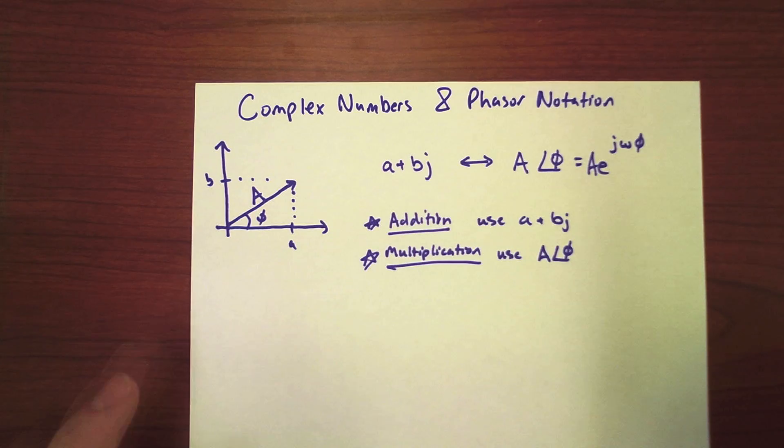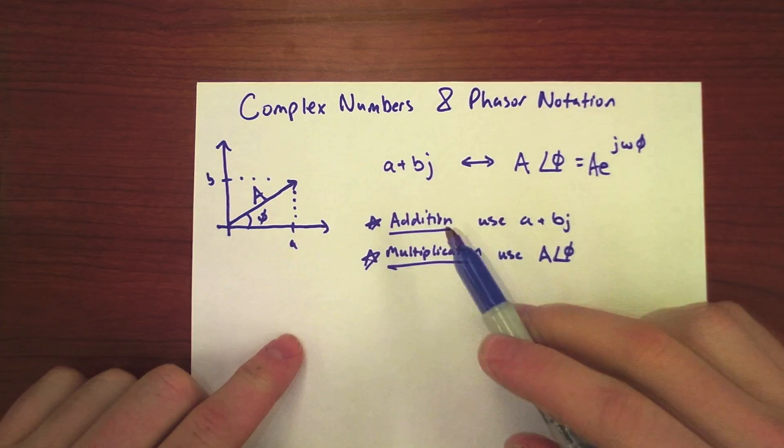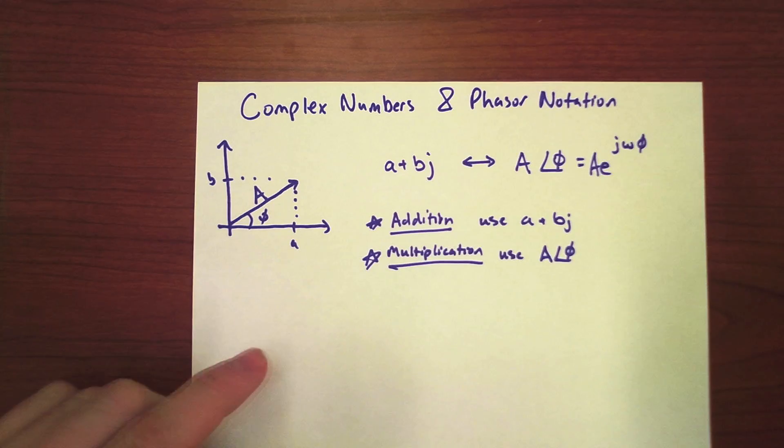Hi, today we're going to be talking about complex numbers and phasor notation. It's important to know how to convert back and forth because it's going to be easier to solve problems in different notations.